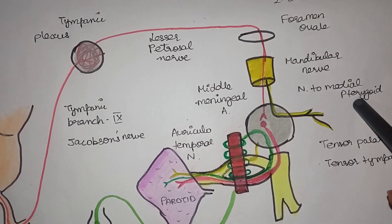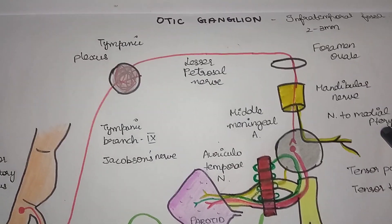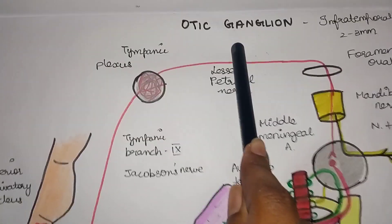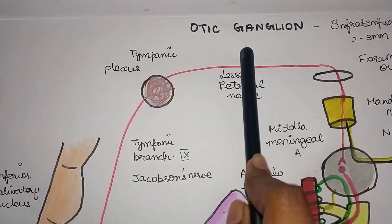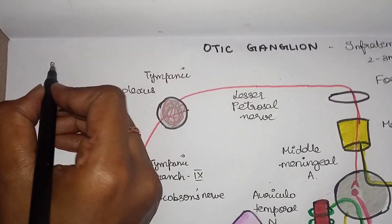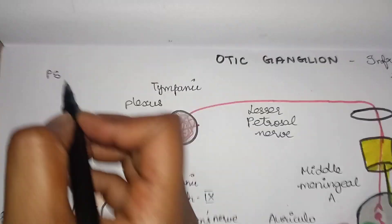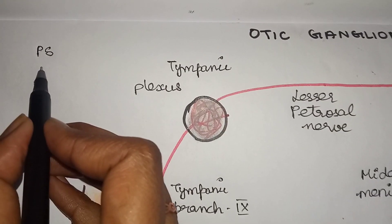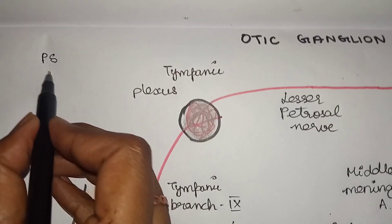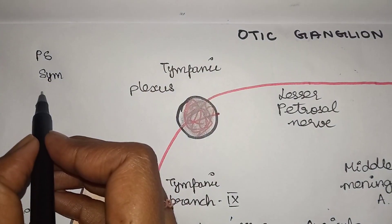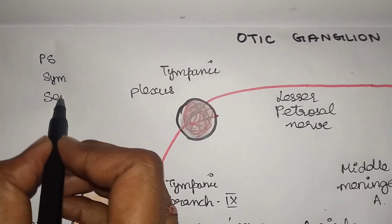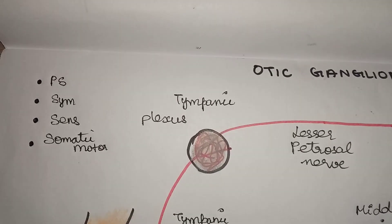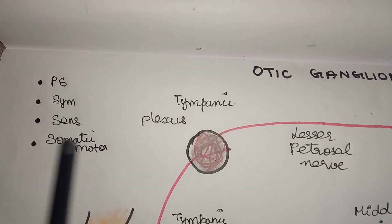There are four components of the otic ganglion. The first one is the parasympathetic component. The second one is the sympathetic component. The third one is the sensory component. The fourth one is the somatic motor component.